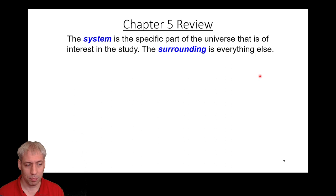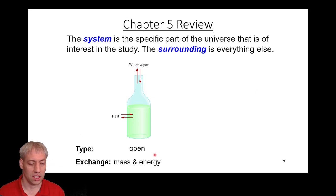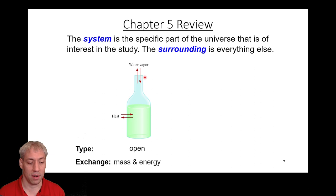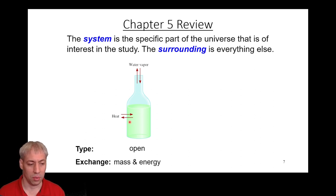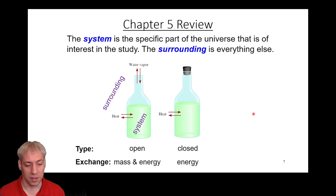When discussing thermodynamics, we have to define the system — the thing we're studying — and the surroundings, which is everything else. We have a few different definitions for drawing these boundaries. An open system is one where both energy and matter can be exchanged: water molecules can move in and out, energy can move in and out through the glass. The inside is the system, the outside is the surroundings.